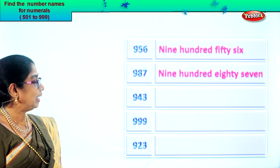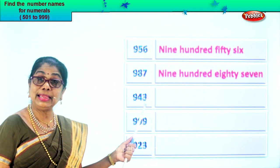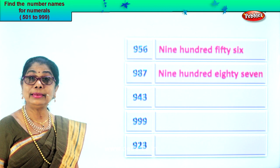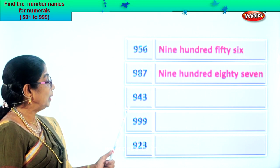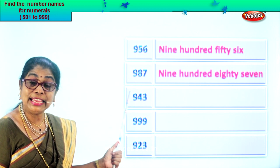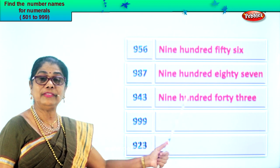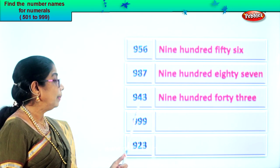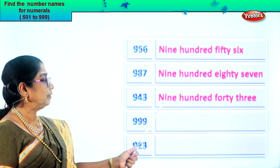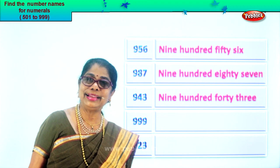Next numeral we have is nine, four, three. Three in the ones place, four in the tens and nine in the hundreds place. So we read this numeral as nine hundred forty-three. So we write nine hundred forty-three — first nine, then hundred, then we write forty-three. Good.